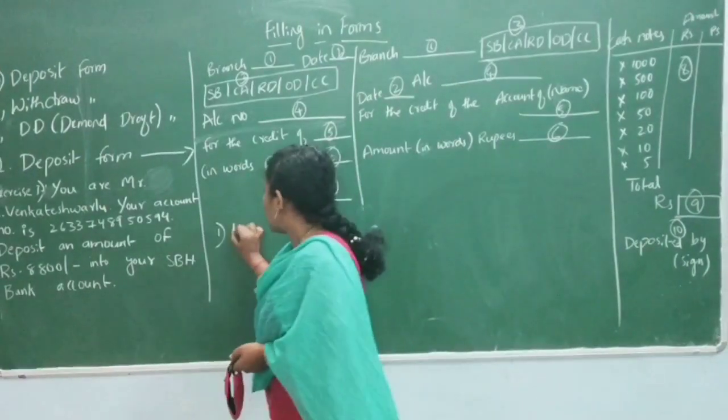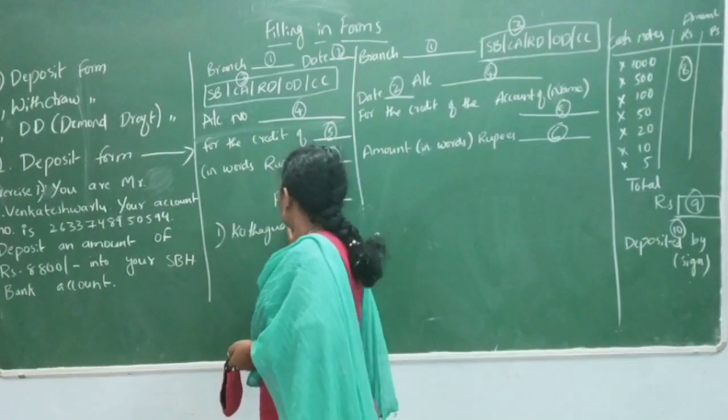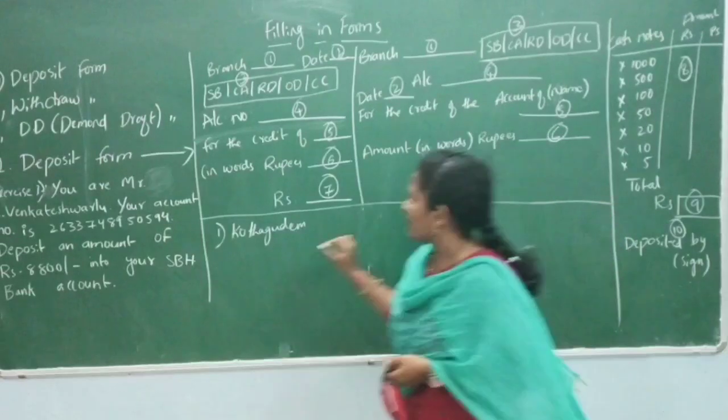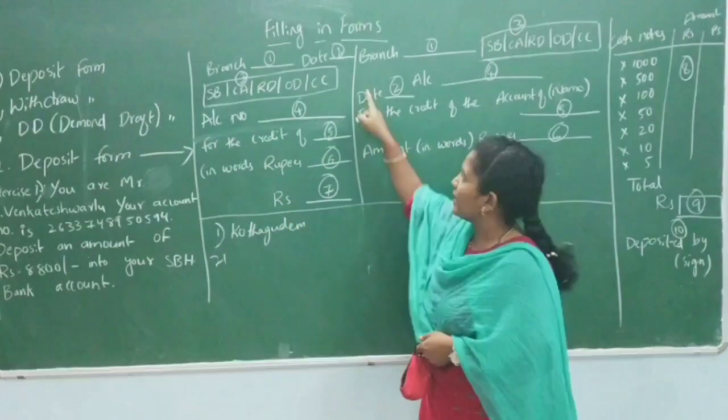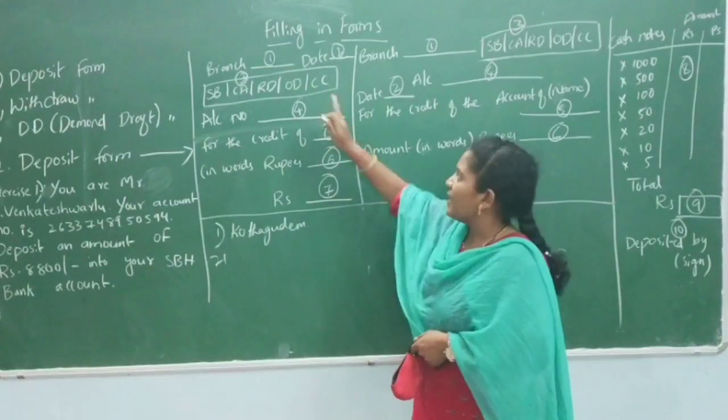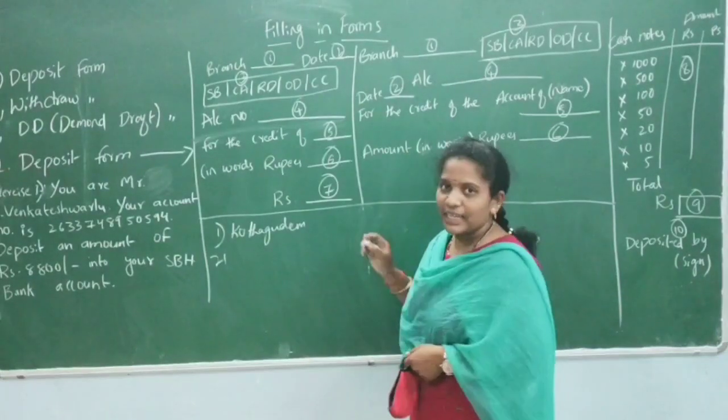This branch is going to accept deposits. On the right-hand side and the left-hand side of the form, we will write the required information.